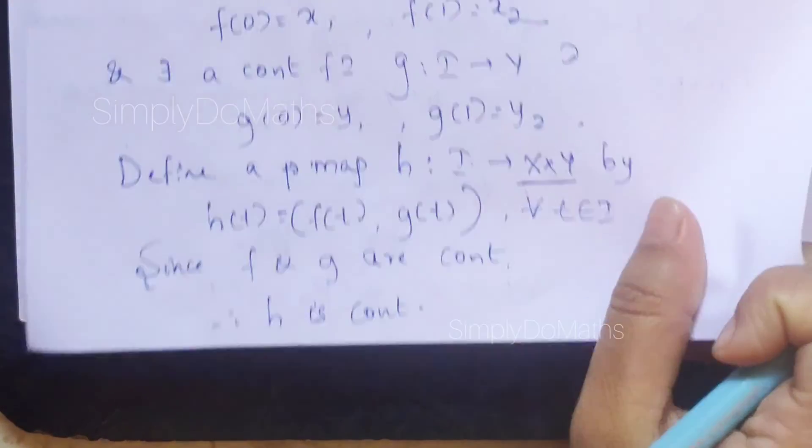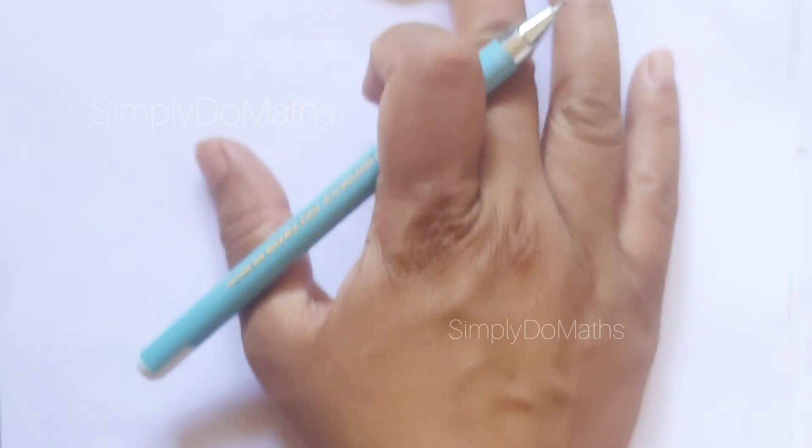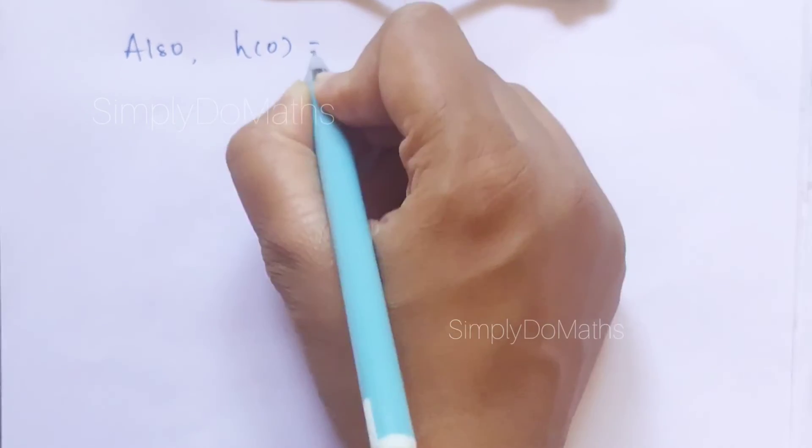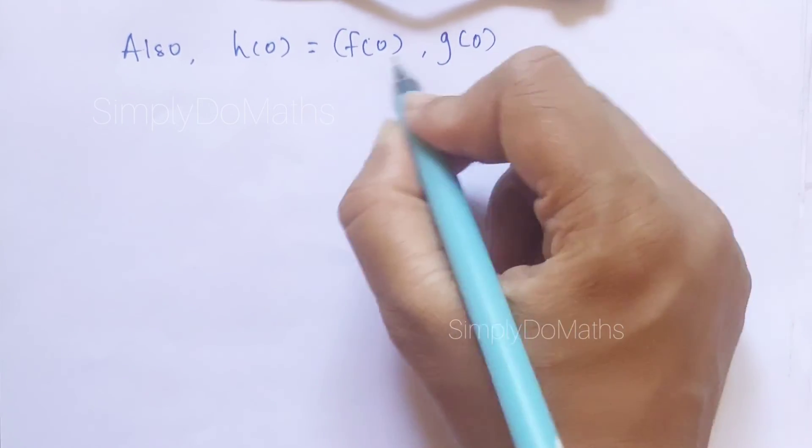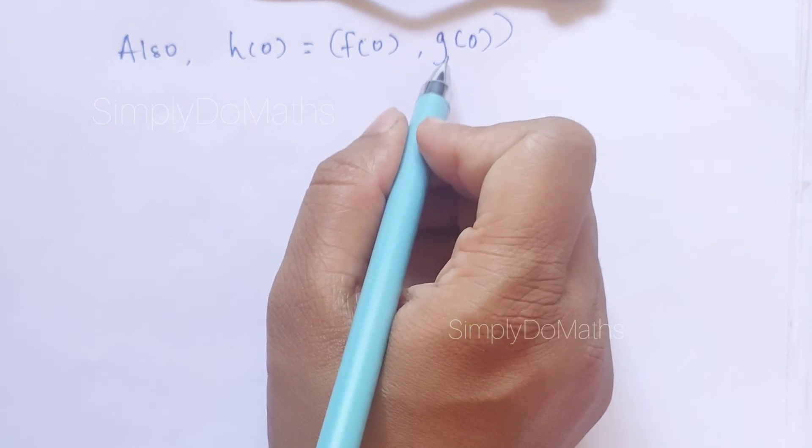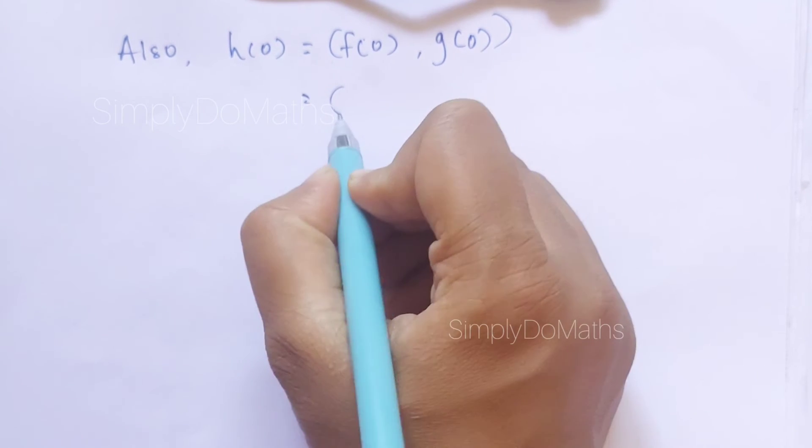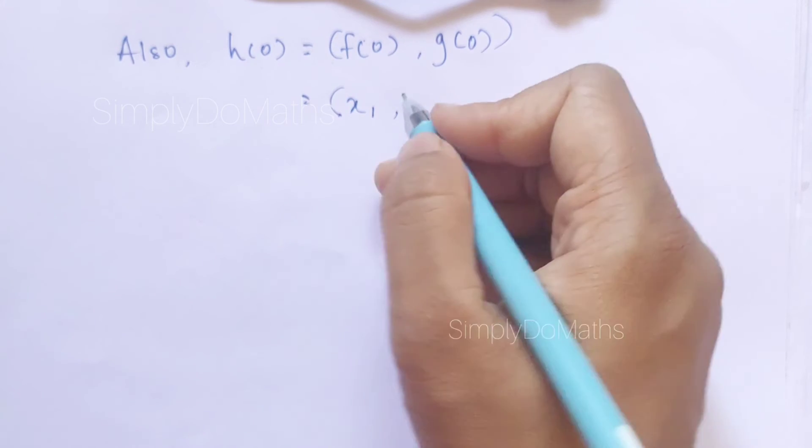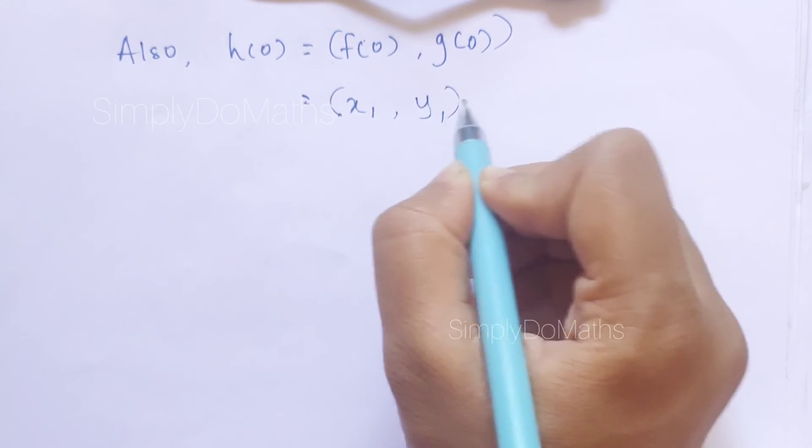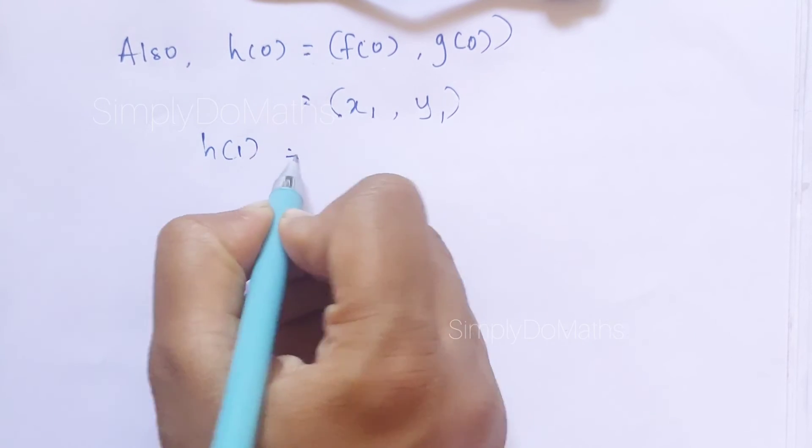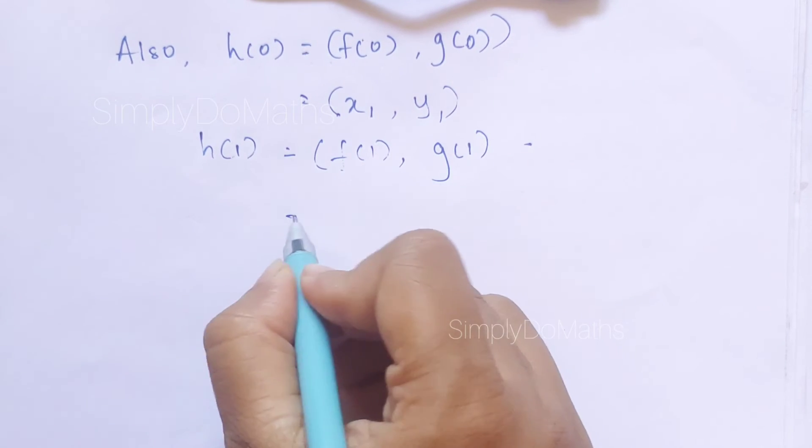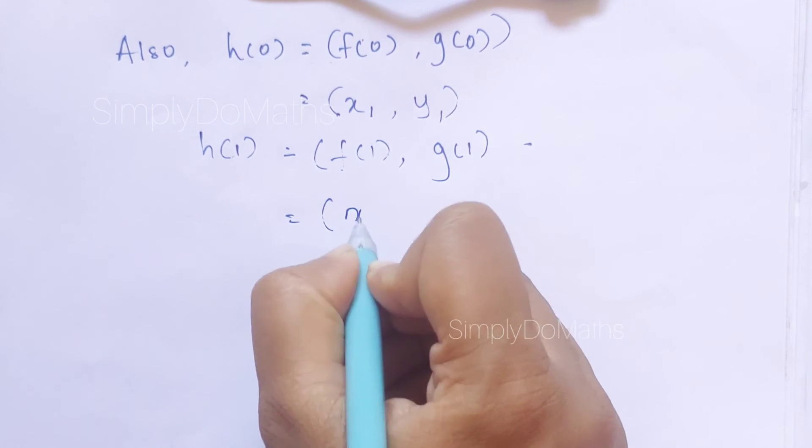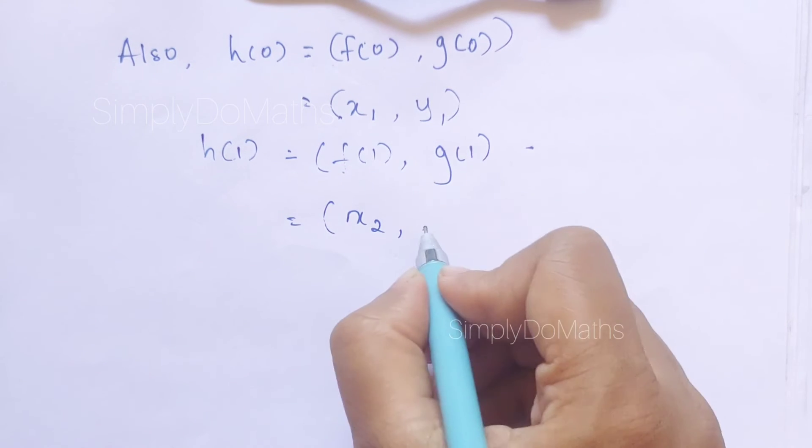Let us find out the value of h(0) and h(1). h(t) is nothing but the ordered pair (f(t), g(t)). In place of t, we have 0 because t belongs to capital I. What is the value of f(0)? f(0) is x₁, and what is the value of g(0)? Which is y₁. Similarly, h(1) will equal (f(1), g(1)). The value of f(1) is x₂, and g(1) value is y₂.